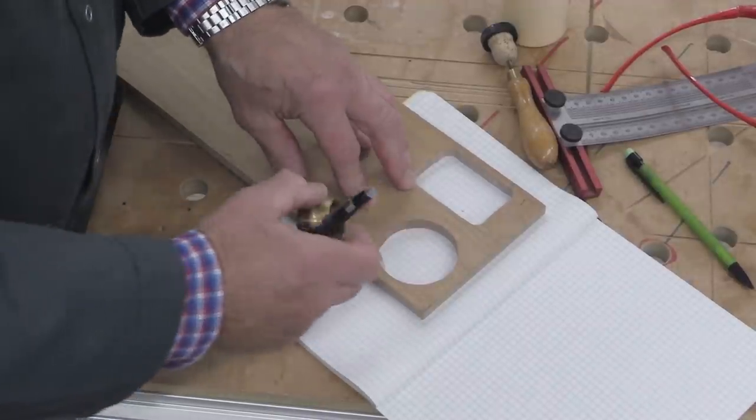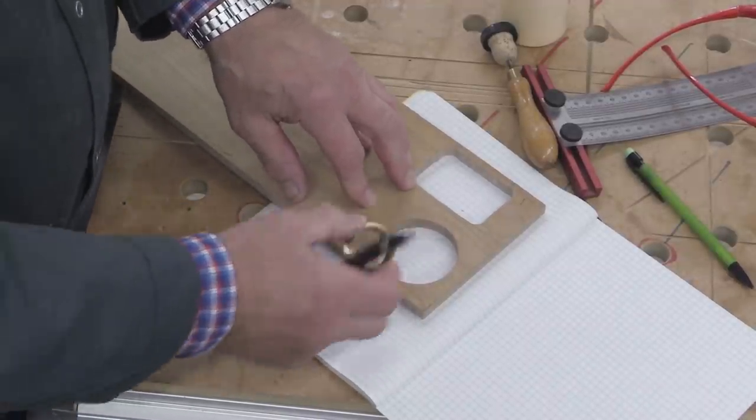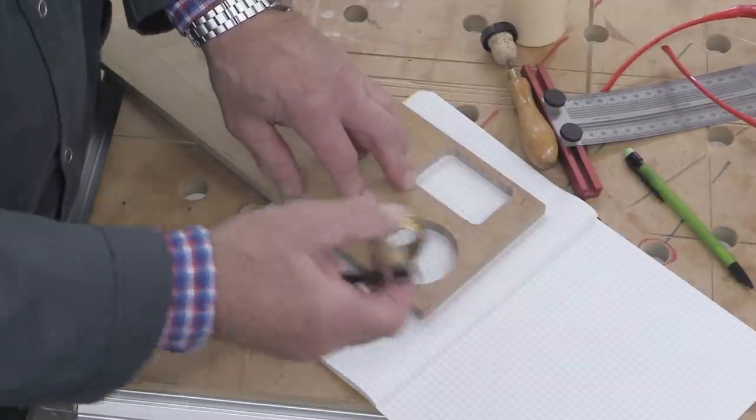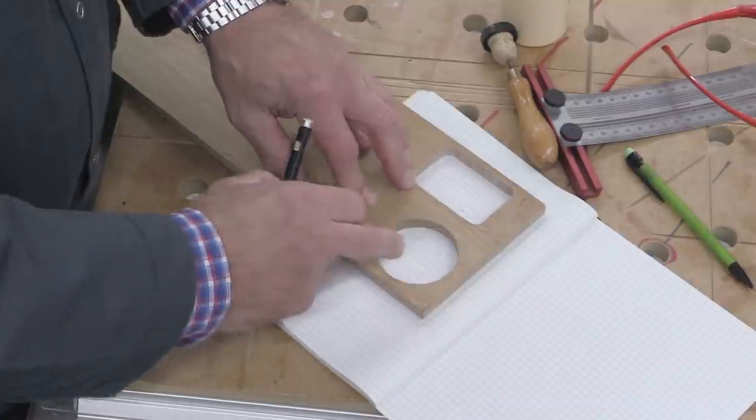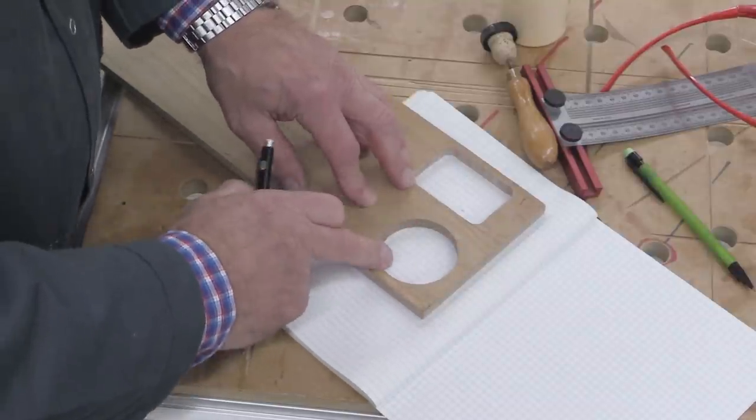But I do need to show you something about the radii of the corners of templates. Now, with a circular template, you can use virtually any size guide bush you like, as long as it fits into the circle. So, that's not really a problem.